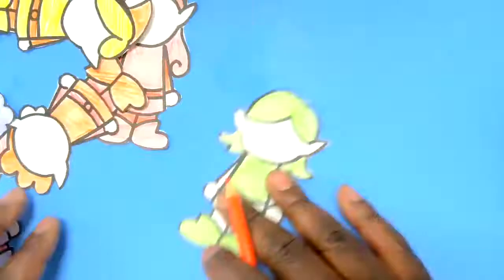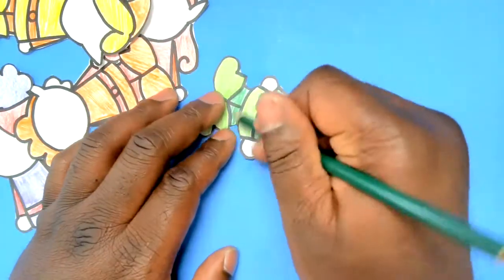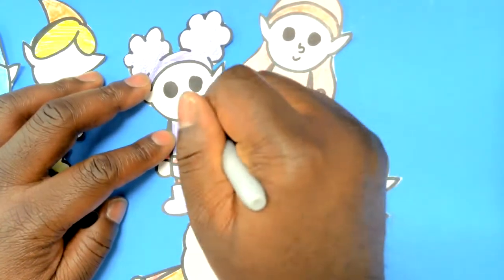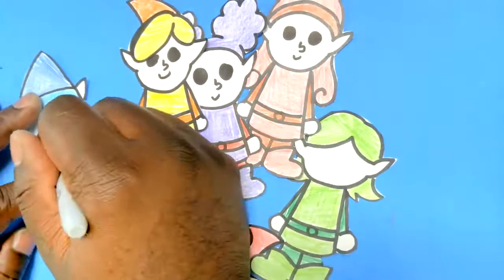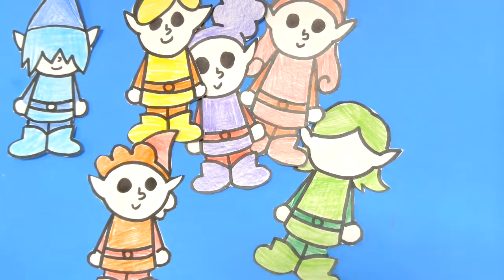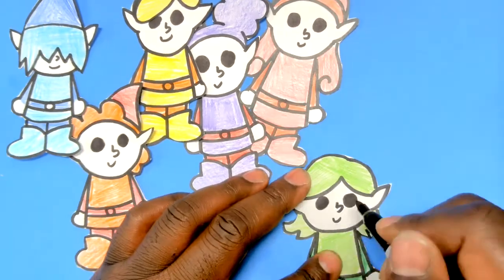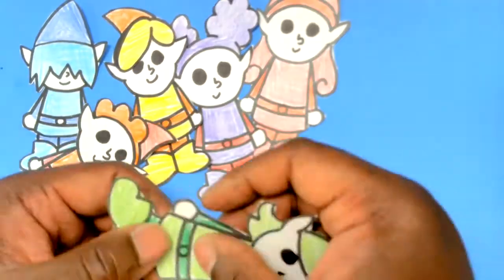Try and cut as close to the black outline as you can. That way there's not a bunch of extra space and you'll be able to see their wings when we get to that part. So after you've colored them and cut them out you can set them aside.